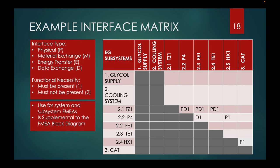The interface matrix is supplemental to the FMEA block diagram. It shows the interfaces between the components of the system and shows whether the interface must be or must not be present for the system to work properly.